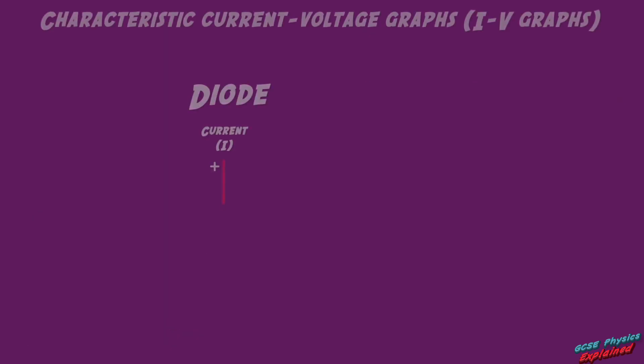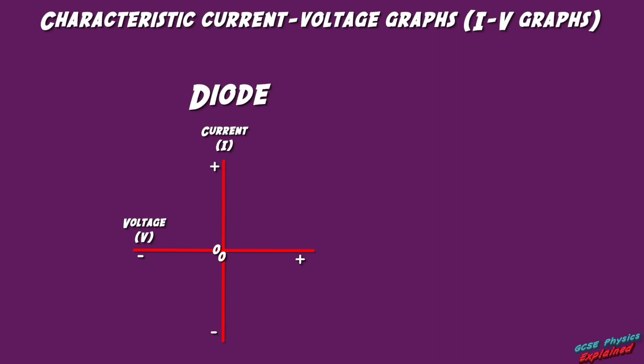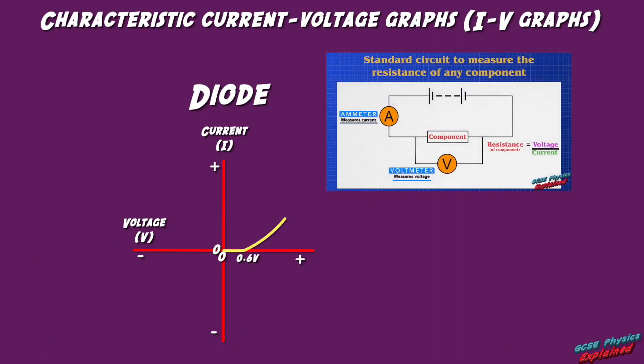Finally, let's look at the IV graph for a diode. In the forward direction, a current doesn't start to flow in the diode until the voltage gets to about 0.6 volts.